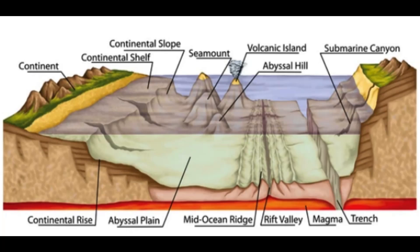The Pacific Ocean Basin is the largest and deepest ocean basin, covering approximately one-third of the Earth's surface. It stretches from the western coast of the Americas to the eastern coasts of Asia and Australia. The Pacific Ocean Basin is characterized by the presence of the Pacific Ring of Fire, a zone of intense volcanic and seismic activity encircling the basin. The basin also features numerous trenches, such as the Mariana Trench, which is the deepest point in the world's oceans.